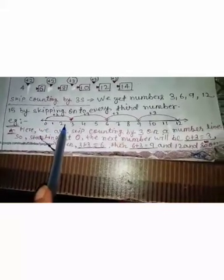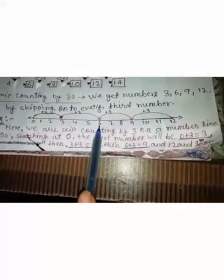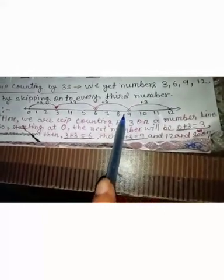Then 3 plus 3, 6. Then 6 plus 3, 9. And 9 plus 3, 12. And so on. We can write down skip counting by 3s similarly.